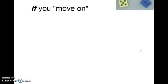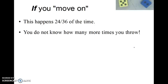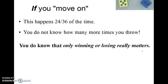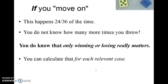Now, if someone moves on, that happens two-thirds of the time. You don't know how many more times you throw. As I said, you might have a knee-jerk reaction that says this could be an infinite series to calculate. But you do know that only winning or losing matters. That's, as I said before, the critical point. And that line is going to show up on the next slide, too. You can calculate for each relevant case. That is, for getting a 4, a 5, a 6, an 8, a 9, a 10. You can calculate the odds of winning or losing on a particular throw. So there's still some real work to do. We're going to have to get some arithmetic. It's not a big deal. But we'll get there.